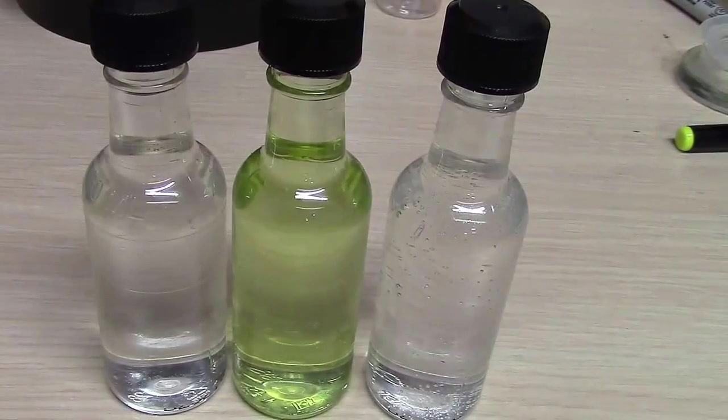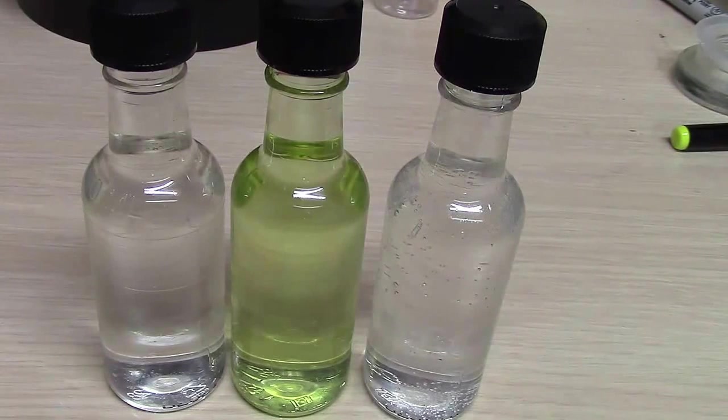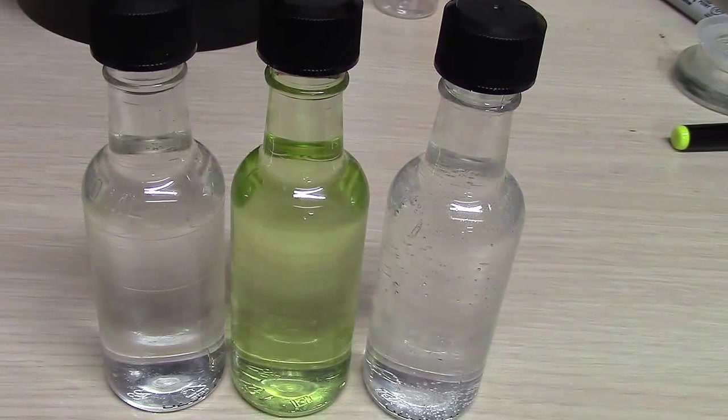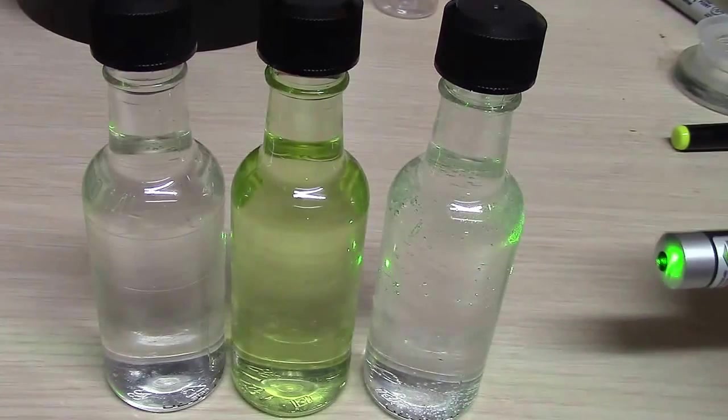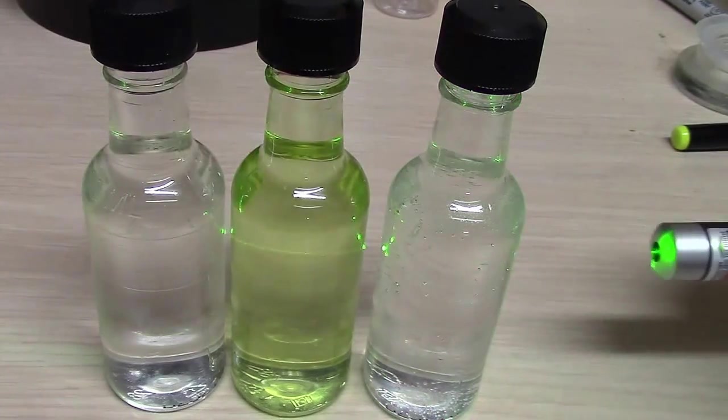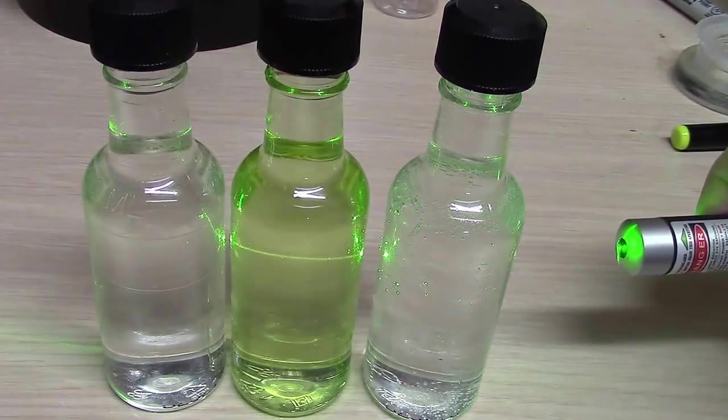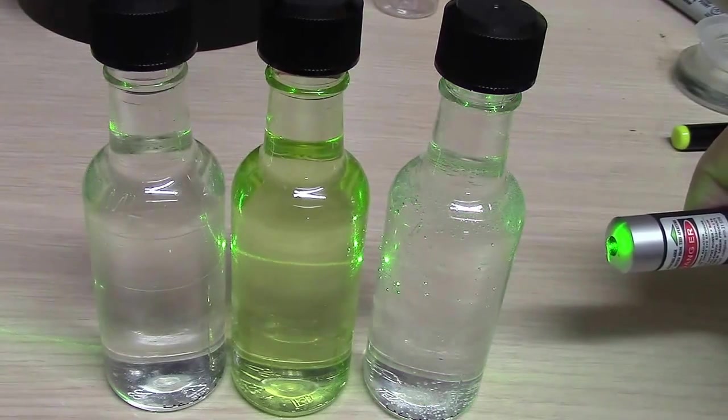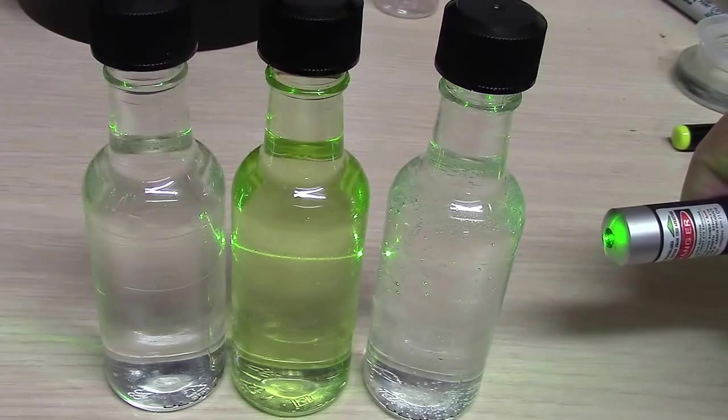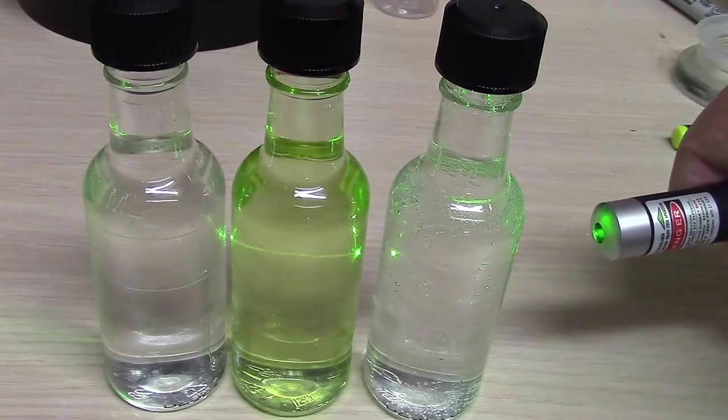One other interesting thing about these solutions and the way they fluoresce is that if I take, for instance, a green light and pass it through, you'll notice that other than the reflections that I get, you don't really see the light as it passes through. The middle bottle shows a little bit of green, but it's really just due to the green tint of the solution I put in there.